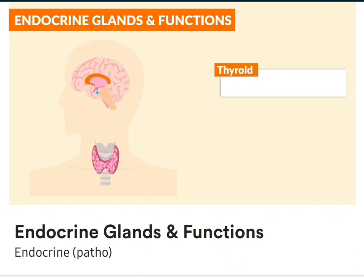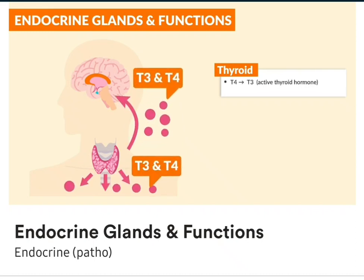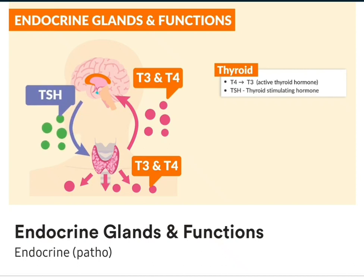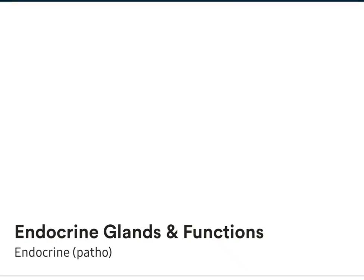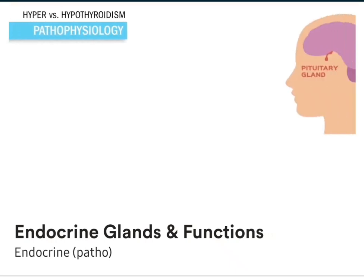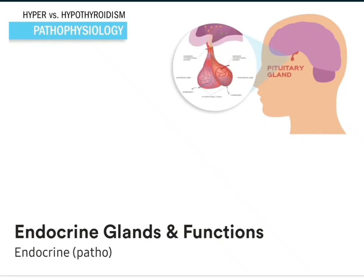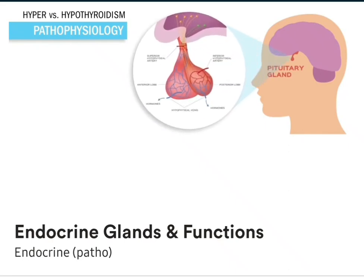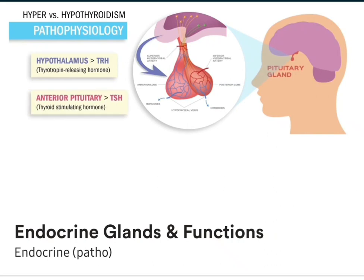Now switching gears to the thyroid. The main ones to know is that T4 converts into T3, the active thyroid hormone, with the help of TSH, the thyroid-stimulating hormone. Just like all endocrine hormones, it's a big game of telephone, or dominoes if you will. The hypothalamus releases TRH, which then tells the anterior pituitary to release TSH, the thyroid-stimulating hormone.